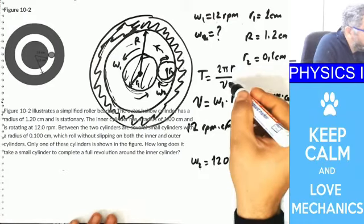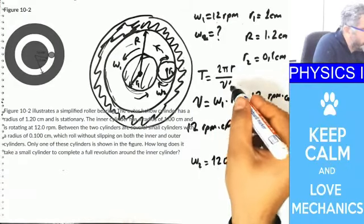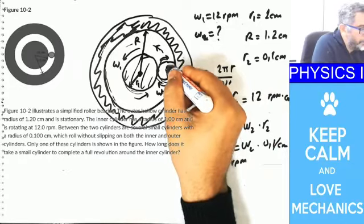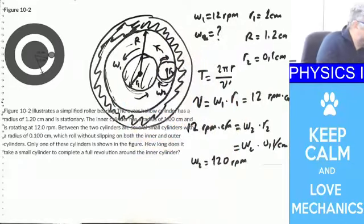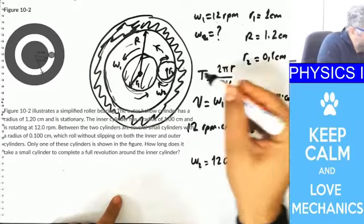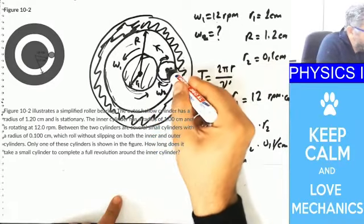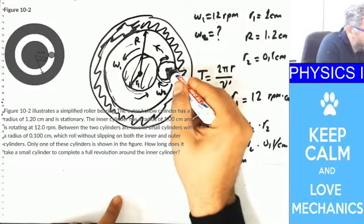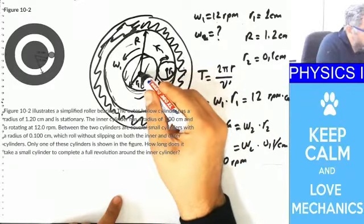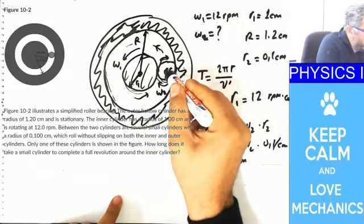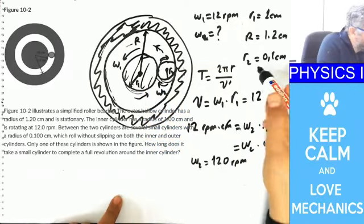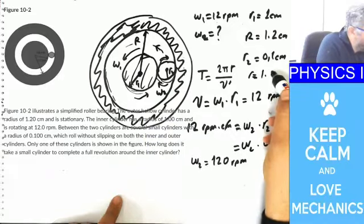This is V prime, because this V and this V are not the same. V prime — let's call the center of mass speed of the smaller wheel in this direction. And this R, from the center of the inner wheel to the center of the smaller wheel, is just R1 plus 0.1, which makes 1.1 centimeters.